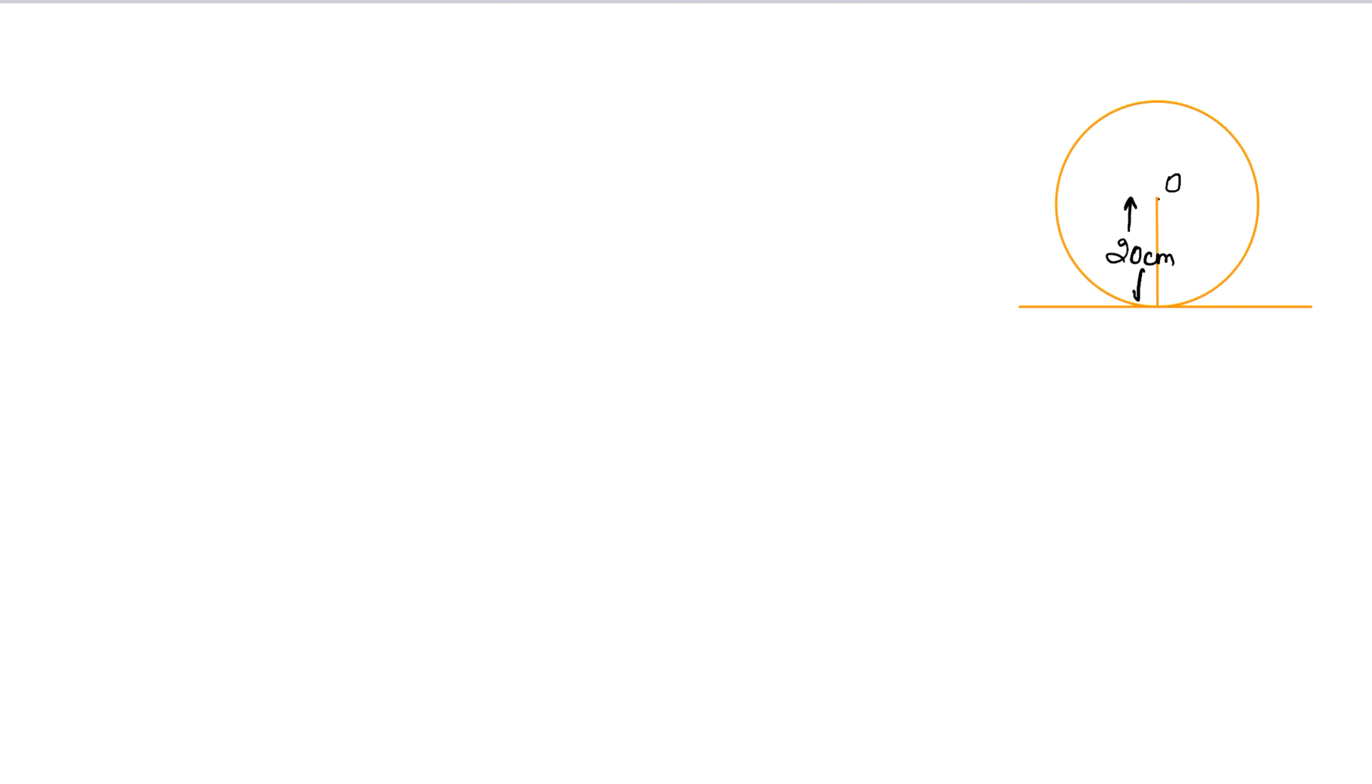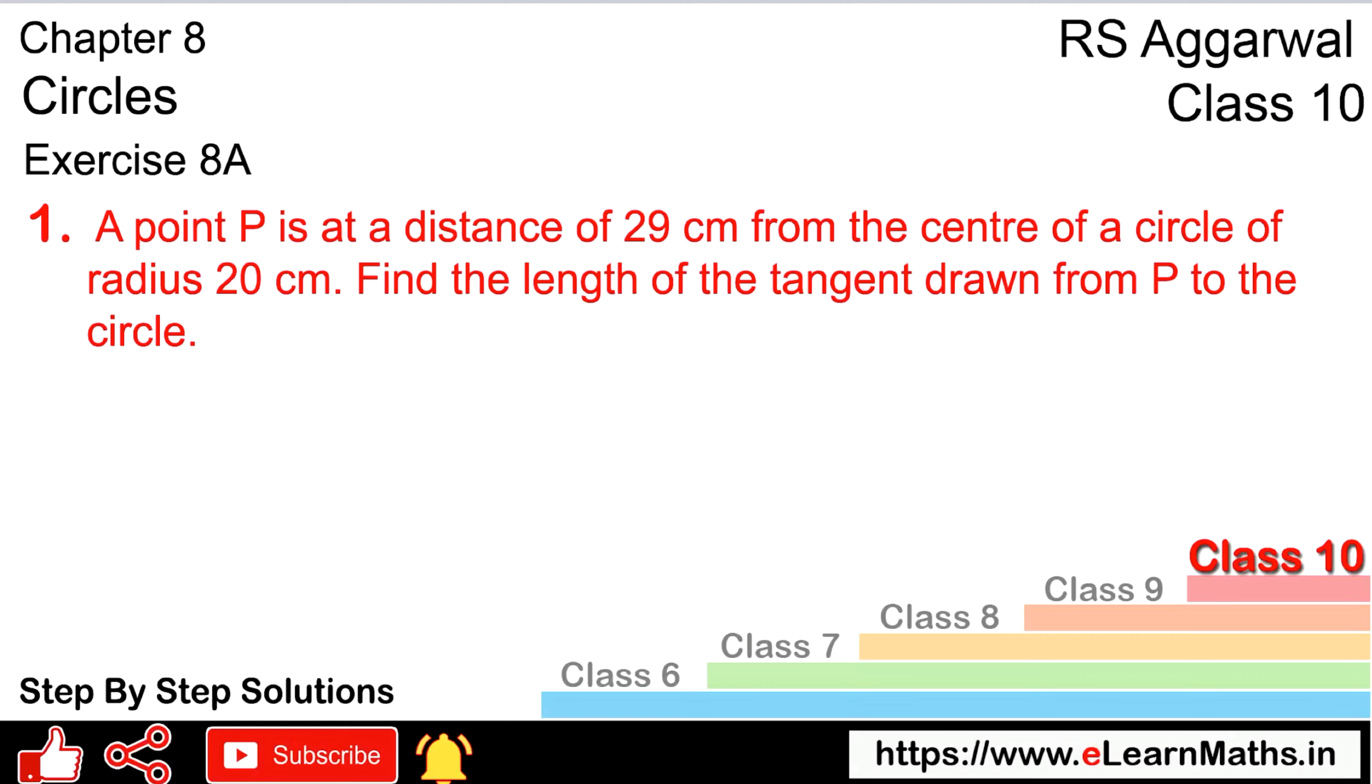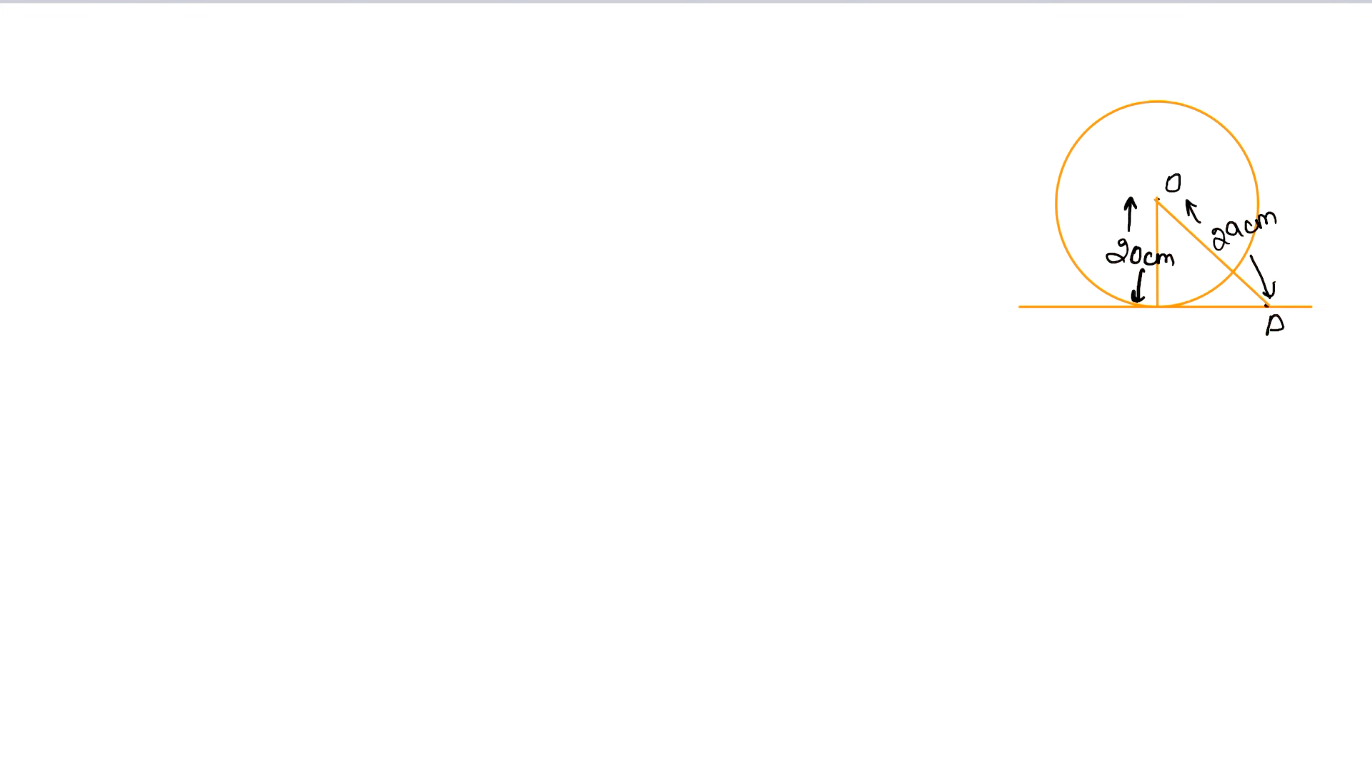Point P is where the tangent is drawn from. This distance is how much? 29 cm. What do we want to find? Find the length of the tangent.